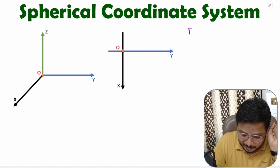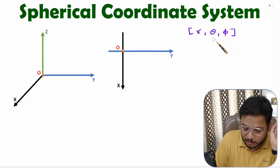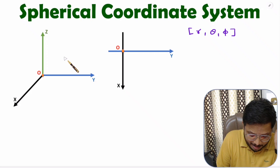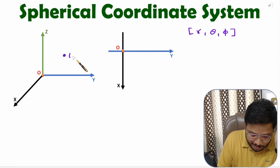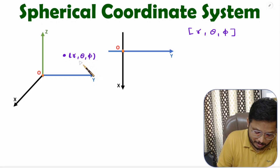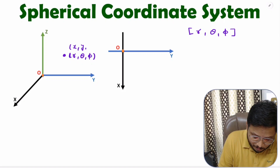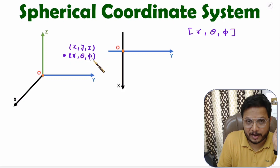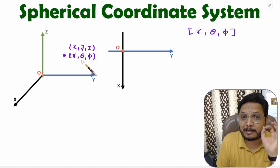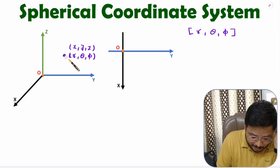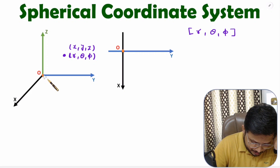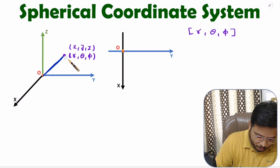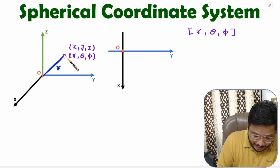First you need to understand what the coordinates are in the spherical coordinate system. Those coordinates are R, theta, and phi. To understand these coordinates, let us consider one point in three dimensions having spherical coordinates R, theta, and phi. In Cartesian coordinates we have X, Y, and Z; in spherical coordinates we have R, theta, and phi. R is the radius of this point with respect to the origin. Theta is the angle of this line with respect to the Z axis.